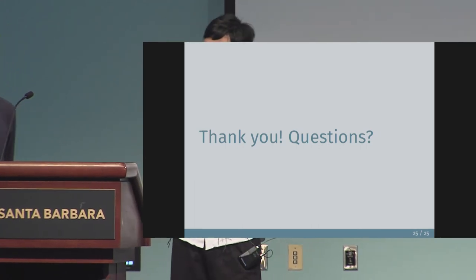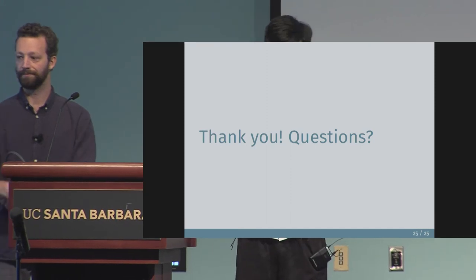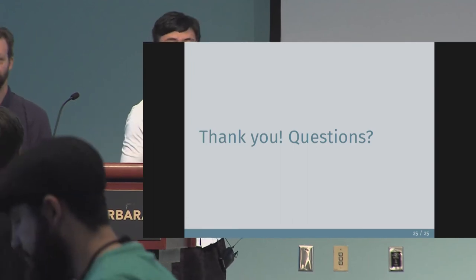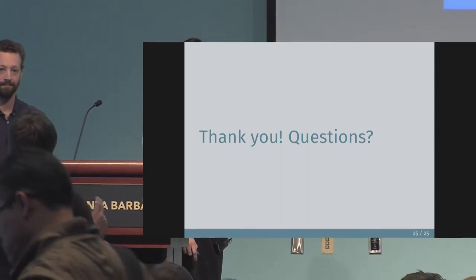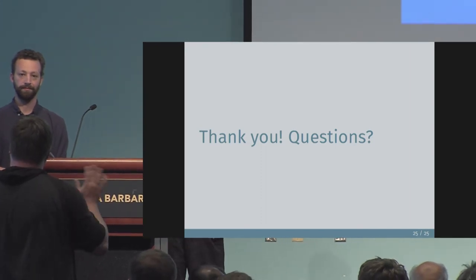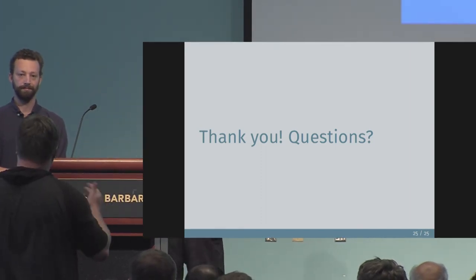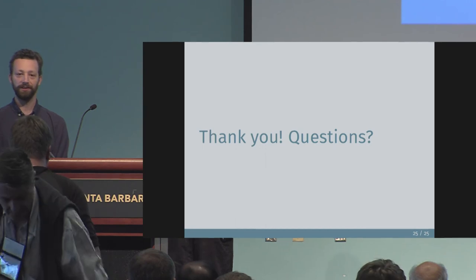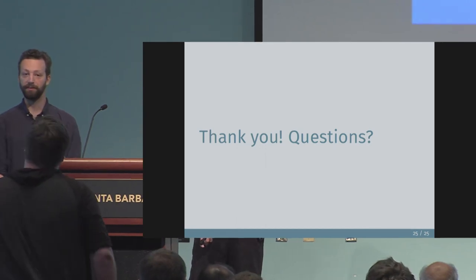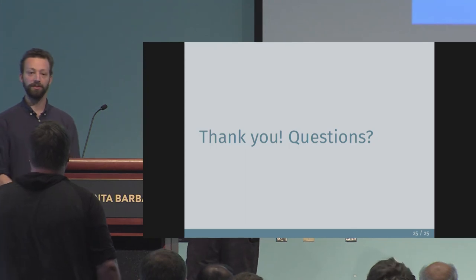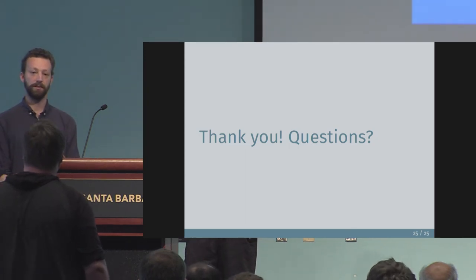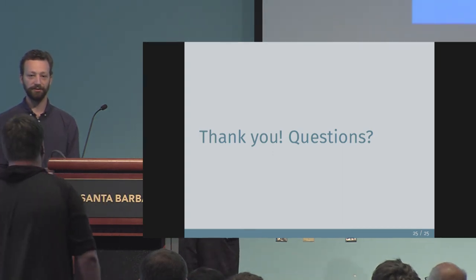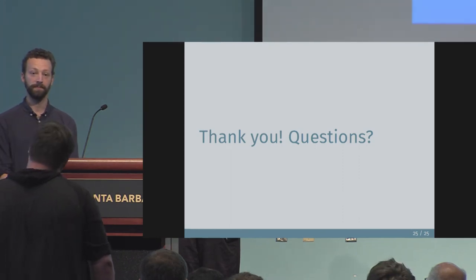We have time for a couple of questions. As part of the motivation, you mentioned Picnic, Dilithium, and MQDSS. MQDSS is Fiat-Shamir based, but it's a five-round identification scheme, not a three-round standard Sigma protocol. Does it still work there without any kind of loss of parameters? We are actually currently working on extending the proof we have for Sigma protocols for three-round schemes to multiple-round schemes. It's a non-trivial extension, but we suspect it should be possible.